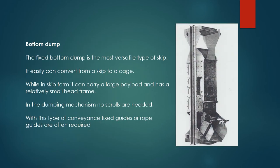Bottom dump. The fixed bottom dump is the most versatile type of skip. It can easily convert from a skip to a cage. While in skip form, it can carry a large payload and has a relatively small head frame. In the dumping mechanism, no scrolls are needed. With this type of conveyance, fixed guides or rope guides are often required.